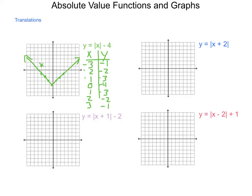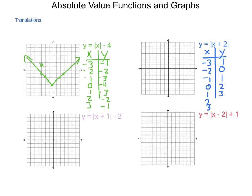Let's look at the next function: y equals the absolute value of x plus 2. Building our table with x values from negative 3 to 3: substituting negative 3, we get negative 3 plus 2 equals negative 1, and the absolute value is 1. Substituting negative 2 gives 0. Substituting negative 1 gives 1. Substituting 0 gives 2, and we continue substituting values and taking their absolute values to complete the table.